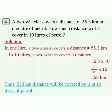Sum number 4: A two-wheeler covers a distance of 55.3 km in 1 litre of petrol. How much distance will it cover in 10 litres of petrol? In 1 litre, a two-wheeler covers 55.3 km. Therefore, in 10 litres, the distance is 55.3 into 10. Write 55.3 as 553 upon 10, then 553 upon 10 into 10. Cancel the 10s to get the final answer of 553 km. Thus, 553 km distance will be covered in 10 litres of petrol. Is it clear, everyone? Very good.